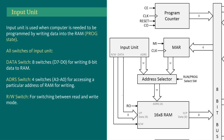We also need an input unit so that we can write specific data or a specific program to our RAM. It will have address switches, data switches, and a read/write switch. The data switch is needed so we can write a specific 8-bit value (D7 to D0) to an address. The address switch (A3 to A0) selects the specific address where we want to save that 8-bit data. The read/write switch controls whether we are reading or writing.